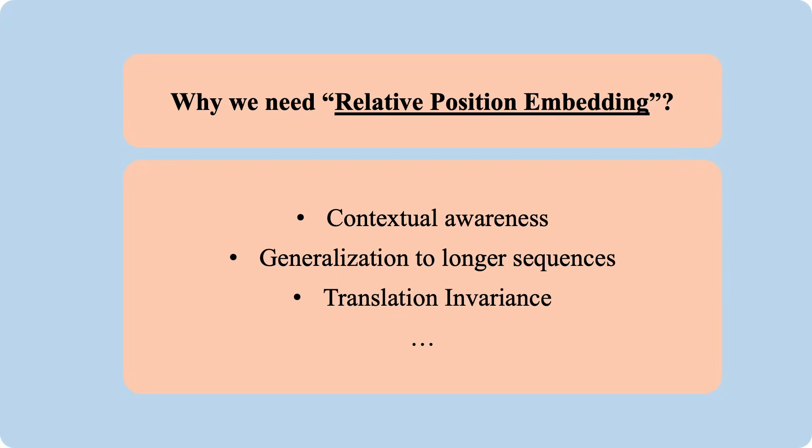So why do we need relative embeddings? Relative position embeddings allow the model to focus on the relative positions of words rather than their absolute position in the sequence. This means the model can learn the context or the relationship between the words more effectively. Besides that, relative embedding can provide a form of translation invariance, which results in improving the model's robustness and performance. Also, in some applications such as modeling music, the relative timing between notes or beats is very important.